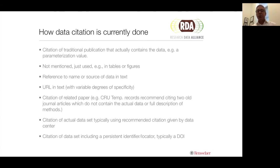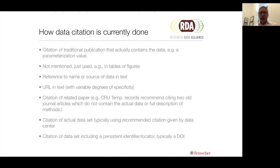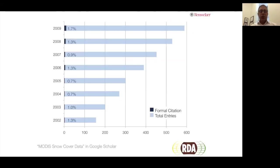And I use the example of the classic temperature records that have been controversial in indicating how the planet has been warming. The recommended citation for those is actually a paper that's several years old, while the temperature records are still ongoing. And then ideally there's a citation of an actual dataset with a specific recommendation given by a data center and ideally using a persistent identifier. Unfortunately, it's not being done. For this particular dataset, which is a remote sensing dataset of snow cover, there's not even a trend there — it's being heavily used and there's a lot of times it's being mentioned, but it's rarely formally cited.